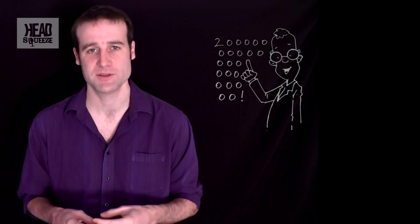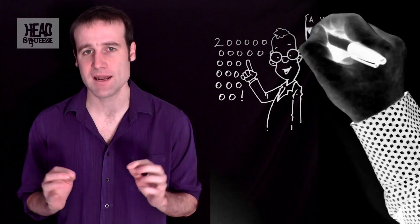Now, 2 sextillion, again, is a bit of a weird number. We would normally write that down as 2 times 10 to the 21. So it's a 2 with 21 zeros after it. It's what we call in maths a very large number.